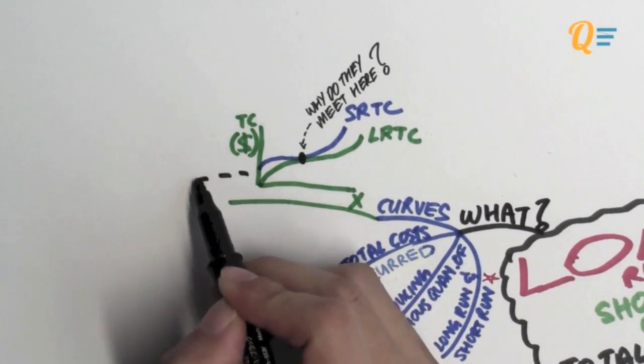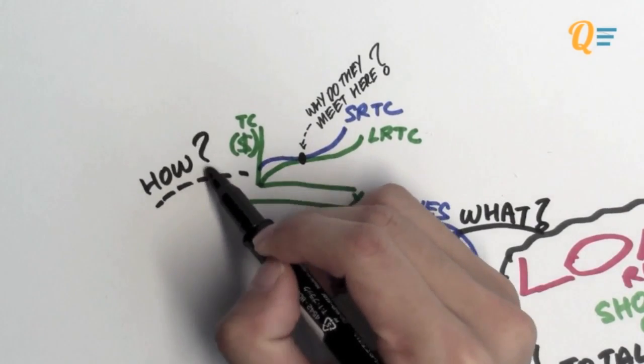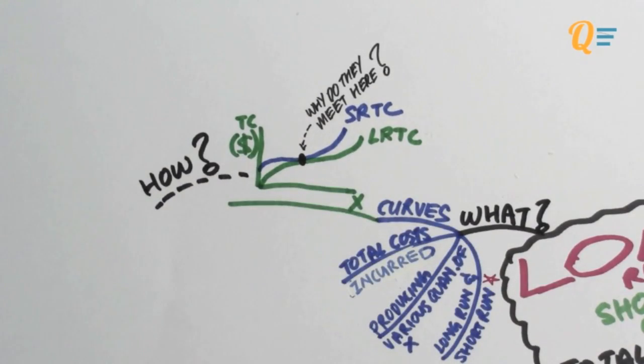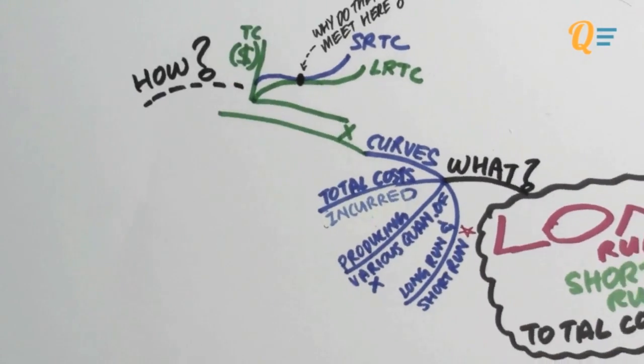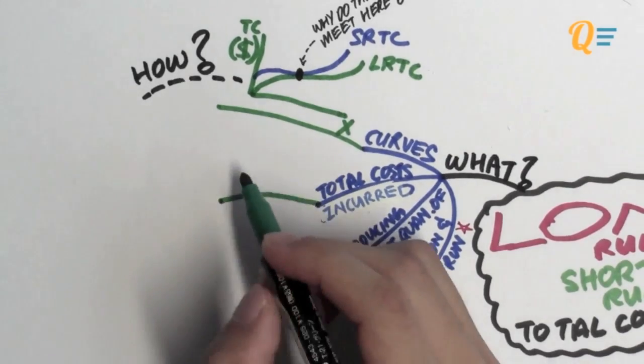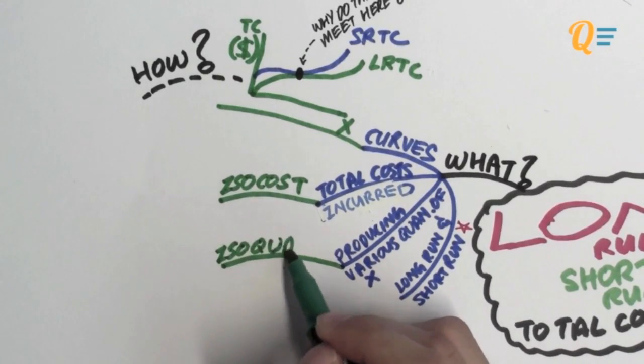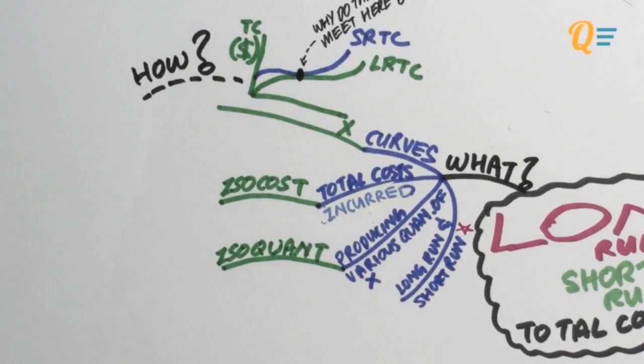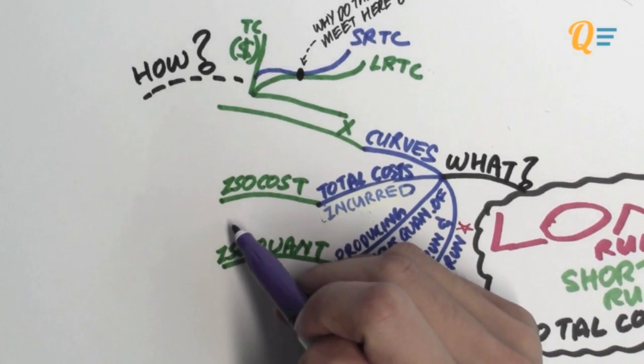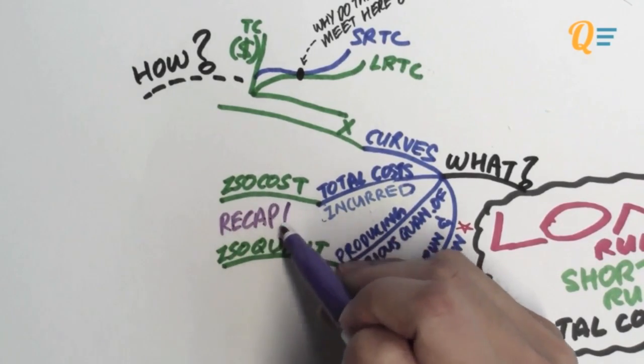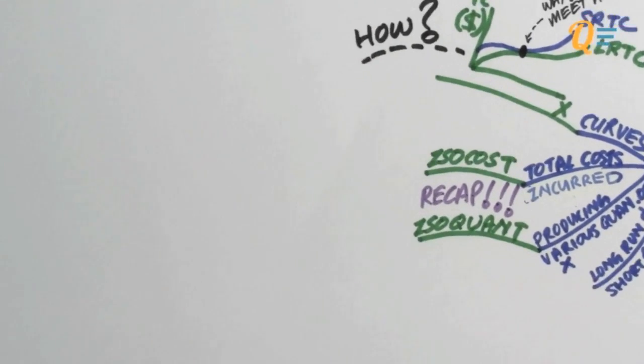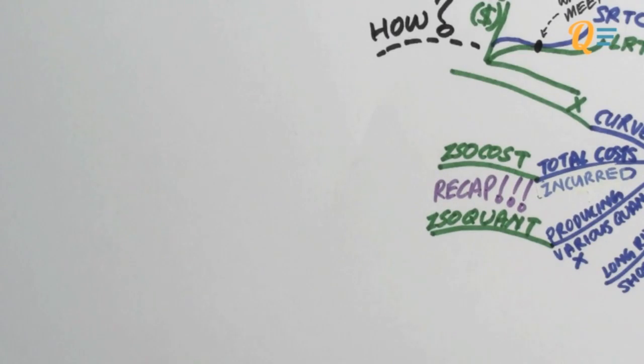So using some rational deductive logic, you should be wondering what can give me the total amount of cost for this amount of quantity produced. Well if you've guessed the isocost then you're right, and you're also going to need the isoquant because the isoquant tells you exactly how much quantity of X is being produced, right? So this is where we're going to pick up from the last video. We're going to do a little bit of recap on what is the isocost and the isoquant and how they work out between each other.